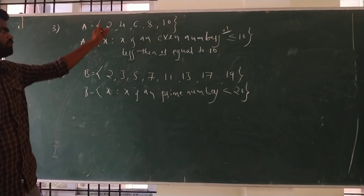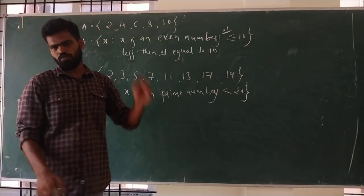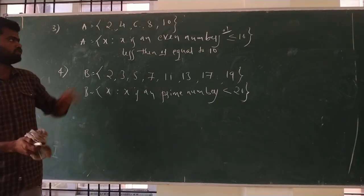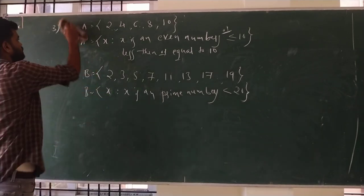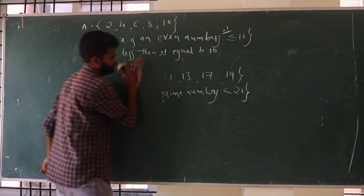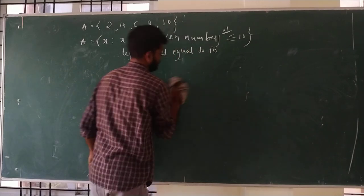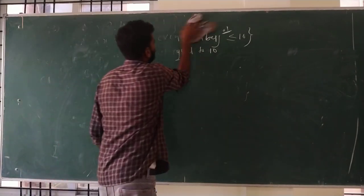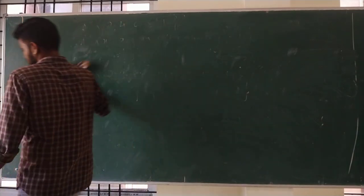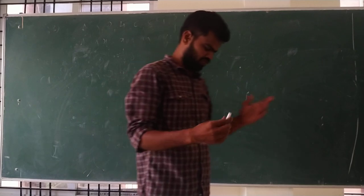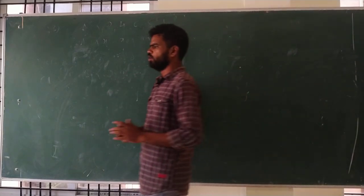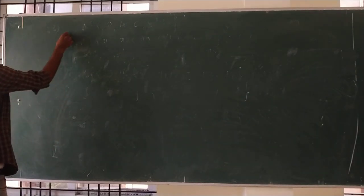So this is the representation of sets — Roster or Tabular form and Set Builder form. The first is Roster or Tabular form, the second is Set Builder form. Next, we look at some definitions of sets.